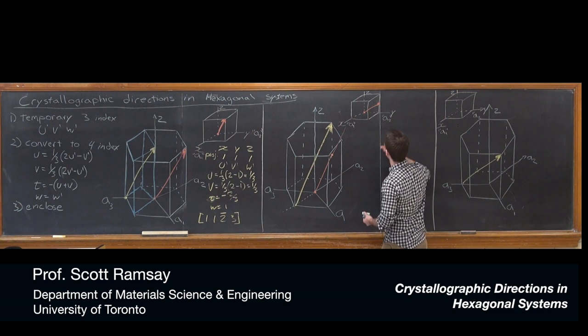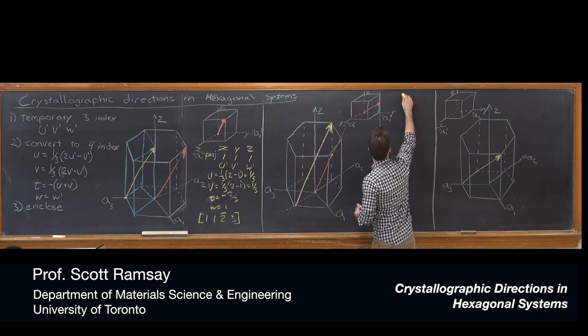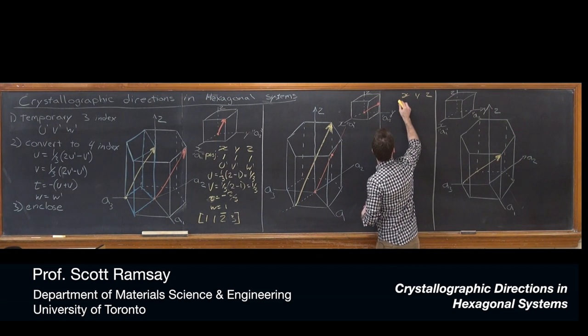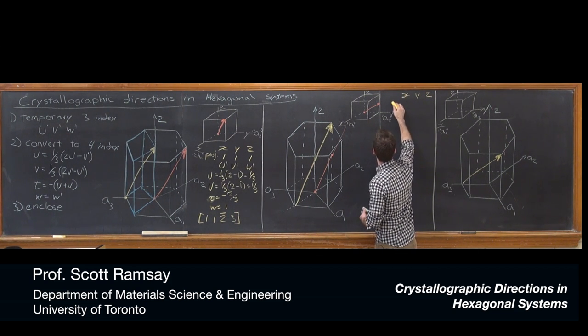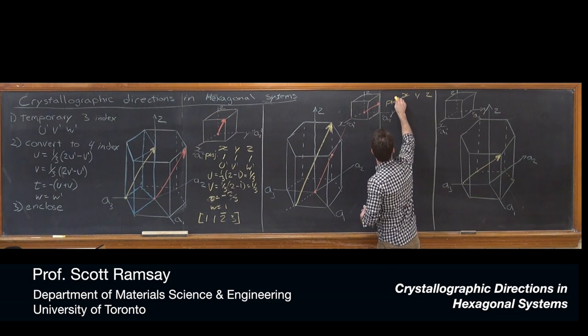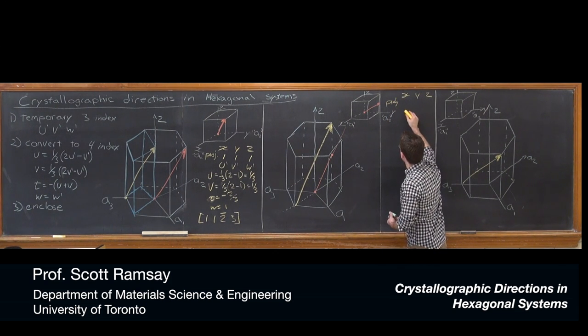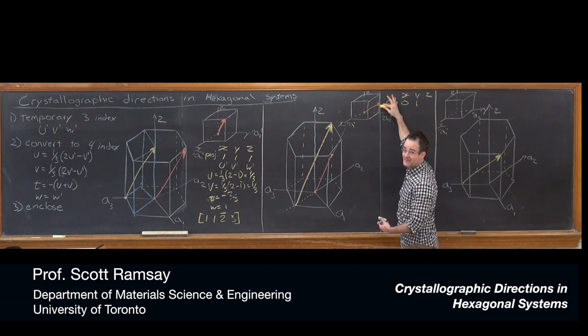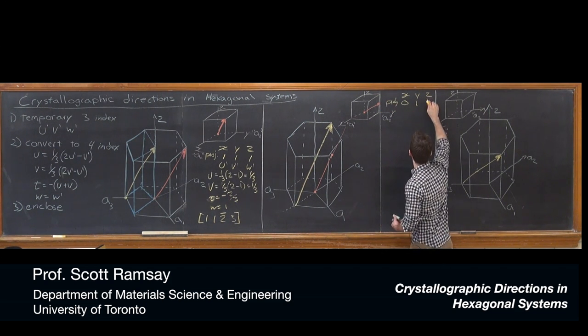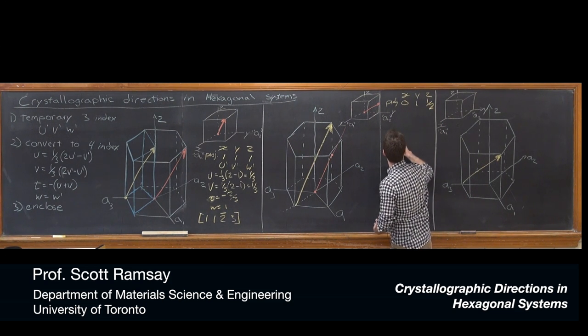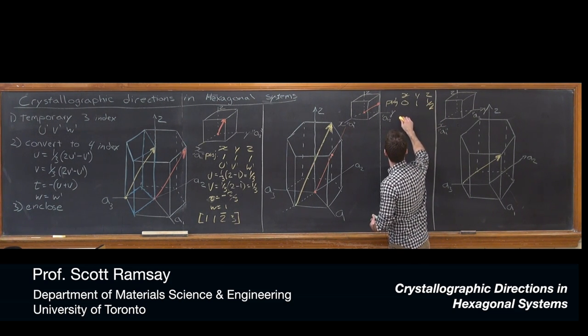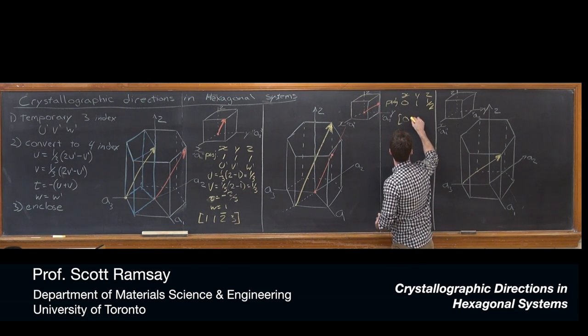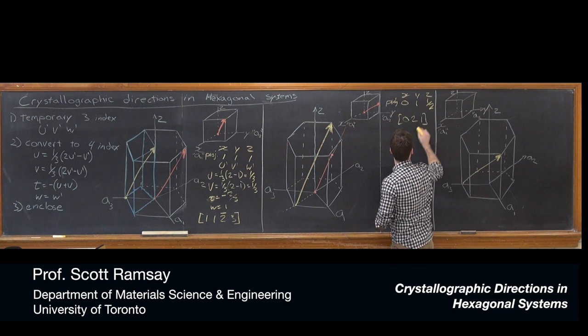That vector originates at our conventional origin, has no component in the X or A1 direction, and exits the unit cell halfway up. If we write our U prime, V prime, and W prime temporary indices, the projection onto X is 0, onto Y is 1, and onto Z it's gone halfway up, which is 1/2. We multiply across by 2 and get our 3-index system as [0,2,1].